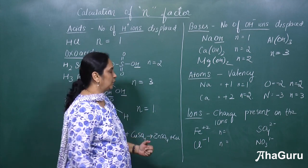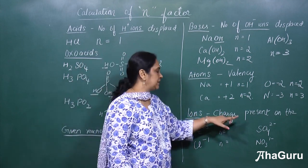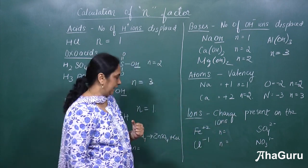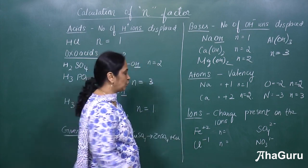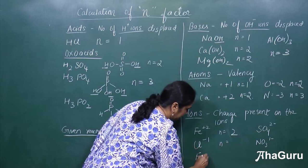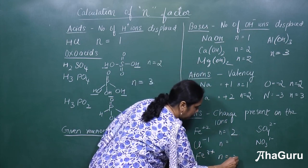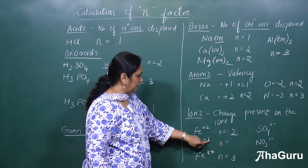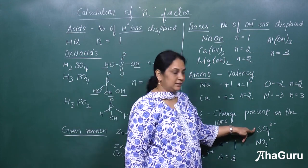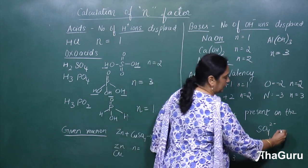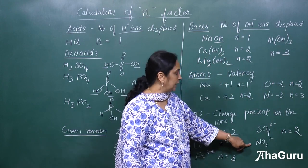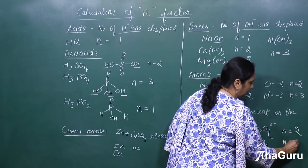For ions, the charge present on the ion equals the N factor. For Fe²⁺, the N factor is 2. For Fe³⁺, the N factor is 3. For Cl⁻ with charge −1, the N factor is 1. For sulfate SO₄²⁻ with charge −2, the N factor is 2. For nitrate NO₃⁻ with charge −1, the N factor is 1.